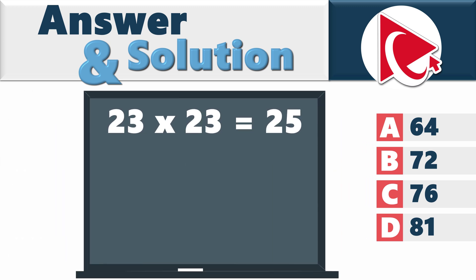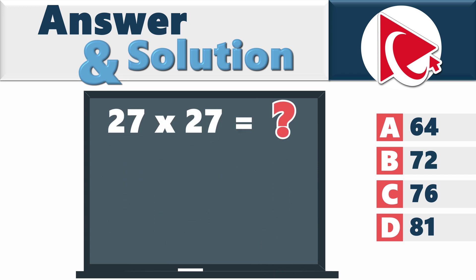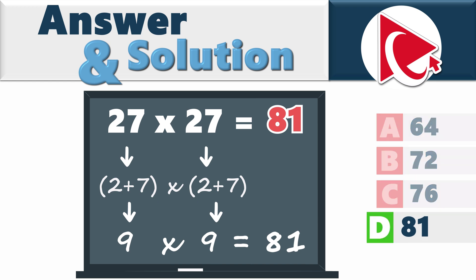Let's look at the example. 23 by 23 would be 2 plus 3 in parentheses multiplied by 2 plus 3, which is 5 multiplied by 5, and the result is 25. The second expression would be 2 plus 5 in parentheses multiplied by 2 plus 5 in parentheses, which equals 7 by 7, which equals 49. So the missing number could be calculated as 2 plus 7 multiplied by 2 plus 7, which equals 9 multiplied by 9, or 9 squared, and equals 81. So the correct answer here is choice D, 81.